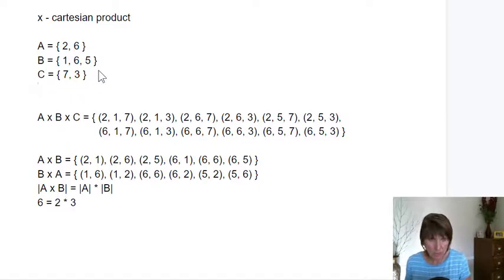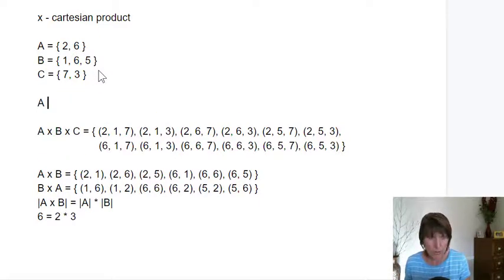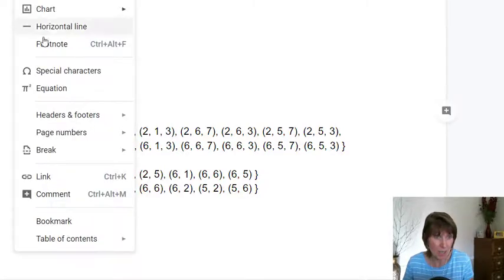It is also possible to do a Cartesian product of a set with itself. You can write this as A cross A, or you can write this as A squared. It isn't that interesting because it works like multiplication.